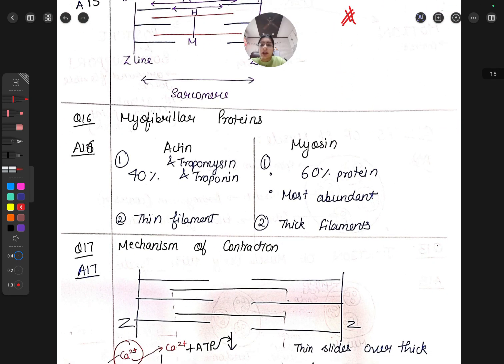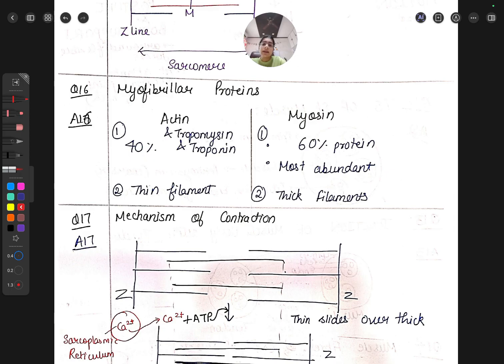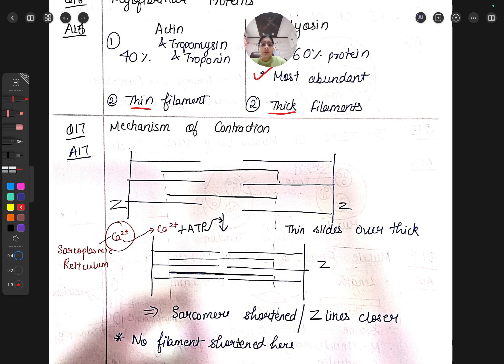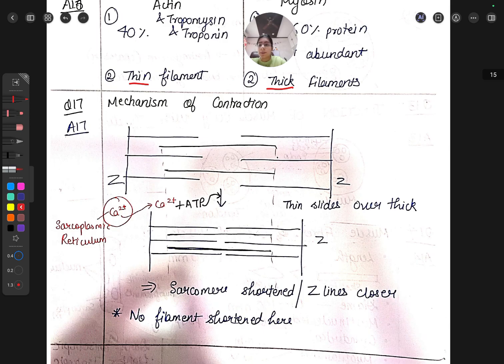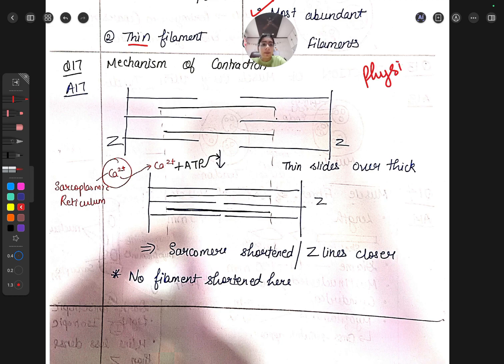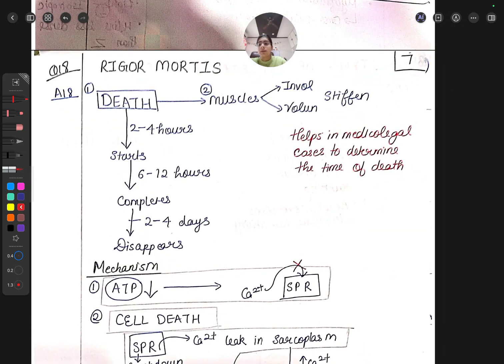Muscle fibers and contractile units - this is done in physiology. Myofibril proteins include actin and myosin. Actin is 40 percent, thin filament; myosin is 60 percent, most abundant, thick filament. This is from NEET background. The mechanism of contraction is learned from physiology - calcium comes from sarcoplasmic reticulum, ATP aids, and there's the sliding filament theory.